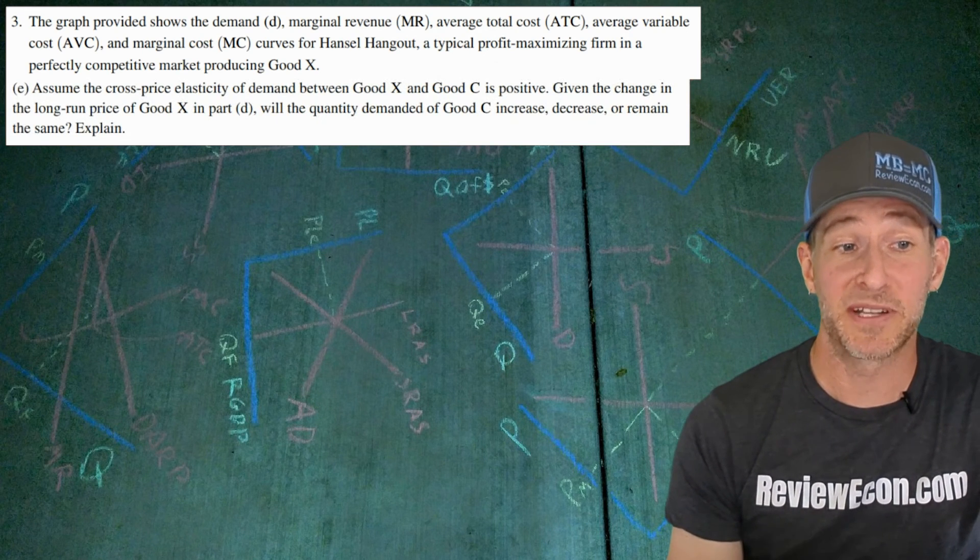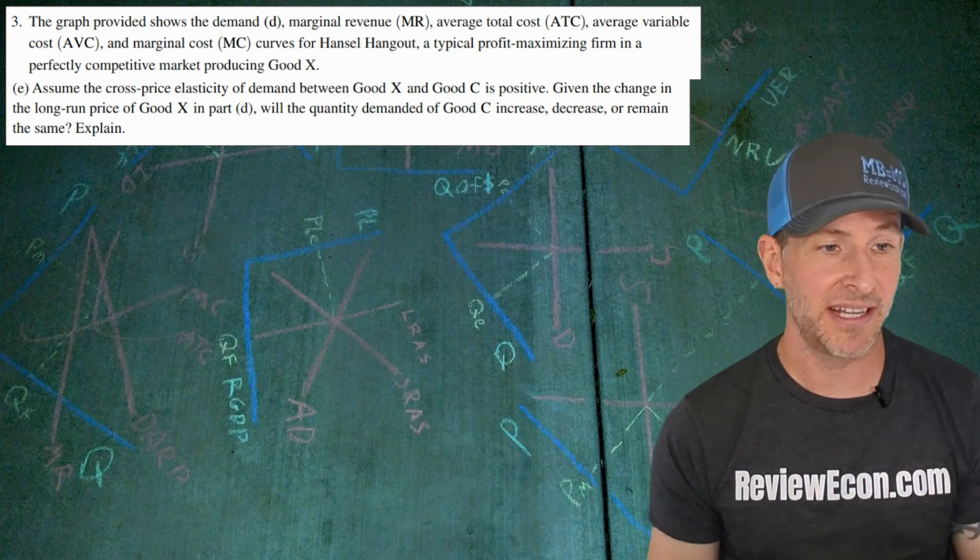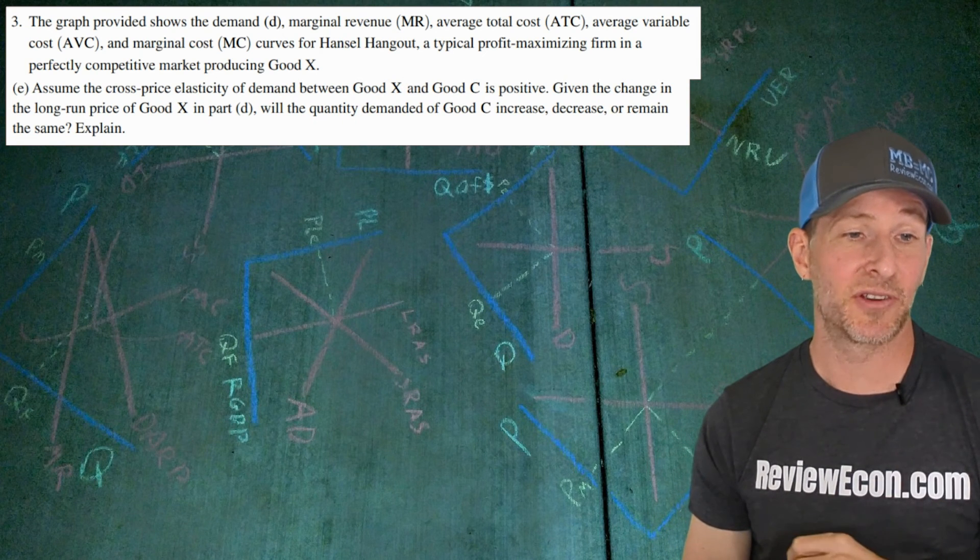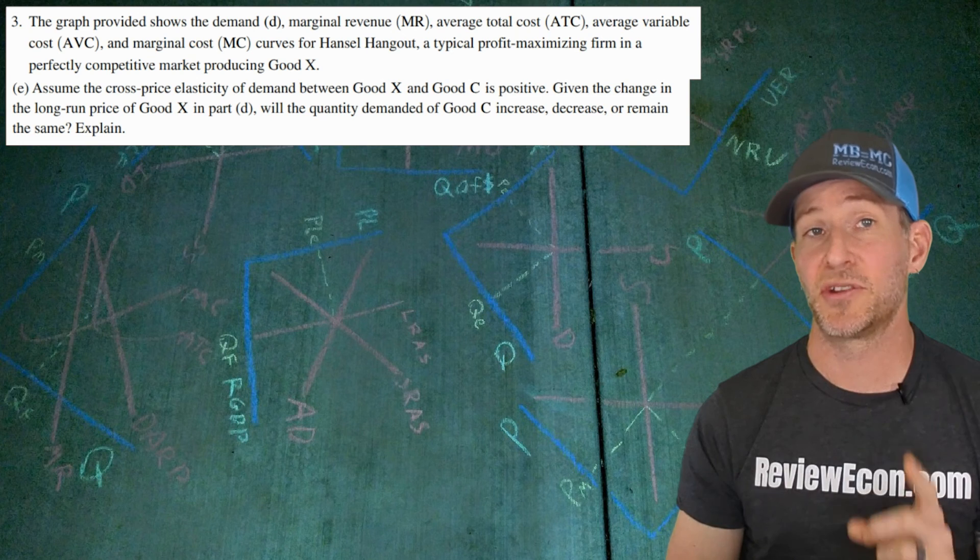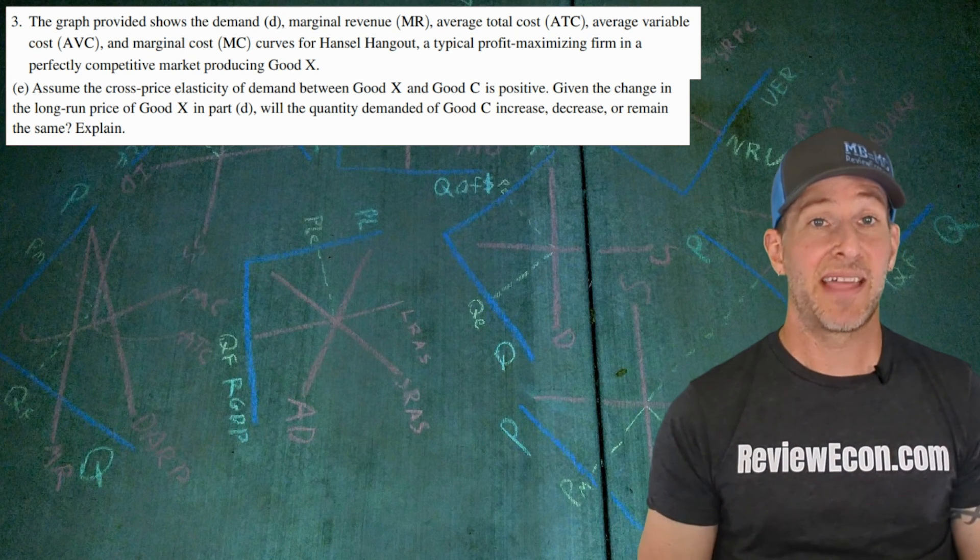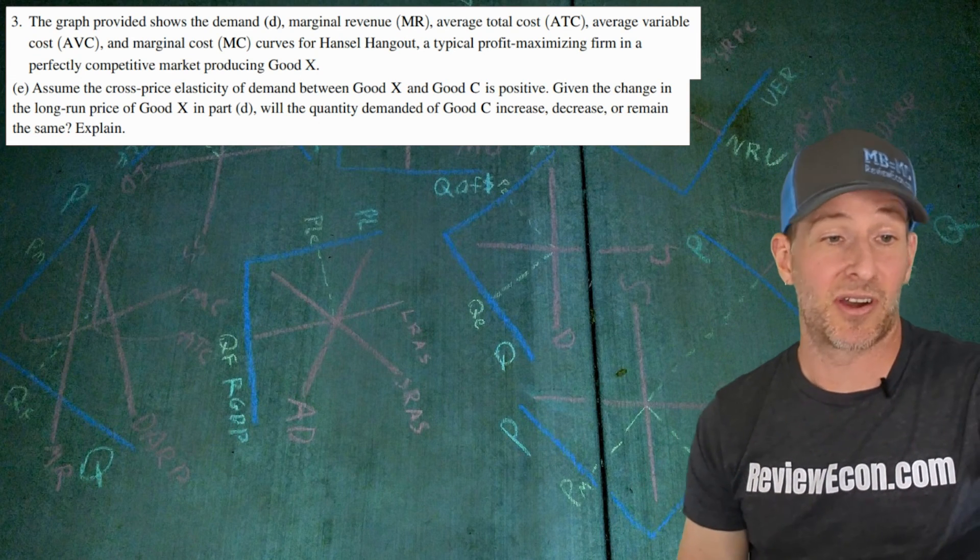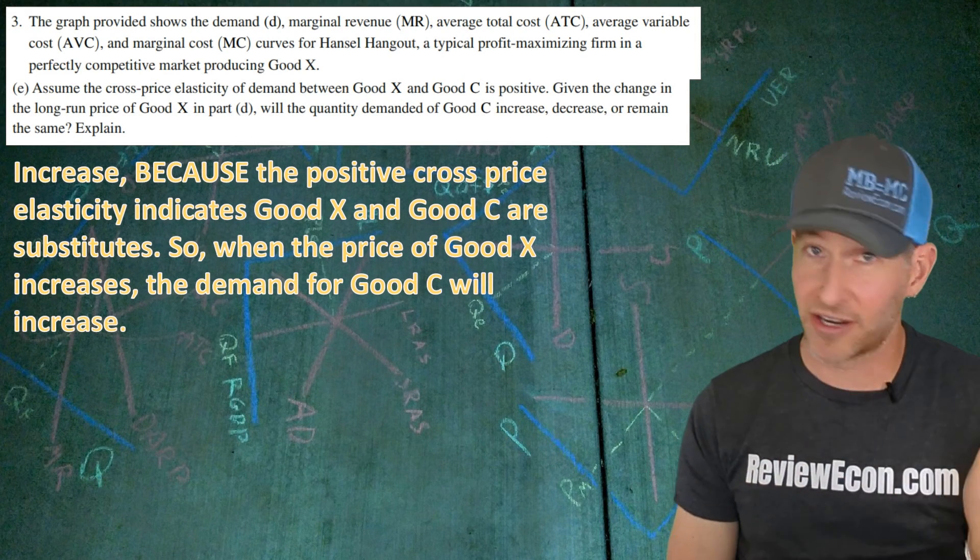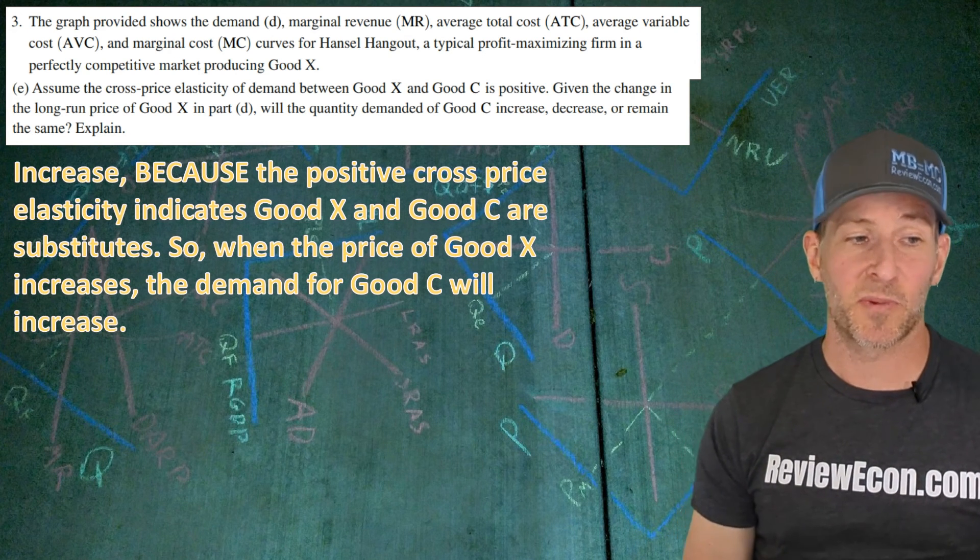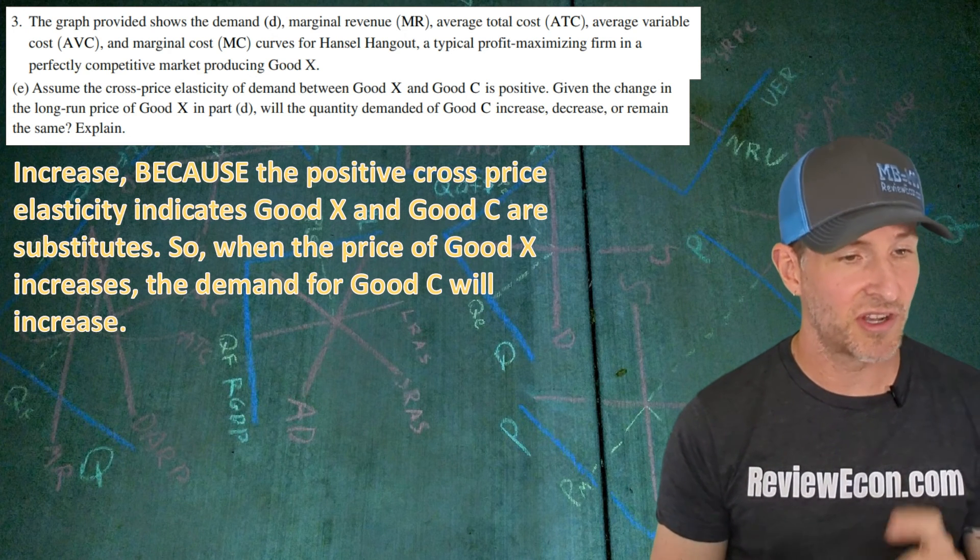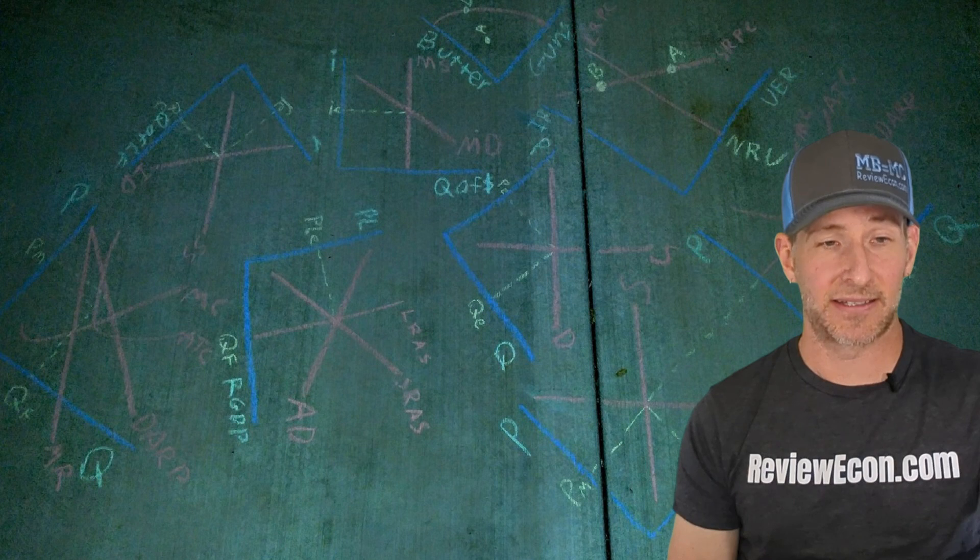On to the next part. We're going to assume that the cross-price elasticity of demand between good X and a new good, good C, is positive. Given the change in the long run price that we just talked about in part D, will the quantity demanded of good C increase, decrease, or remain the same? Now remember cross-price elasticity coefficients are about complements and substitutes. When you have a positive coefficient, that means the price of one good and the demand for the other good are going in the same direction. So that means these are substitute goods. The answer is increase because the positive cross-price elasticity indicates good X and good C are substitutes. So when the price of good X increases, the demand for good C will also increase.